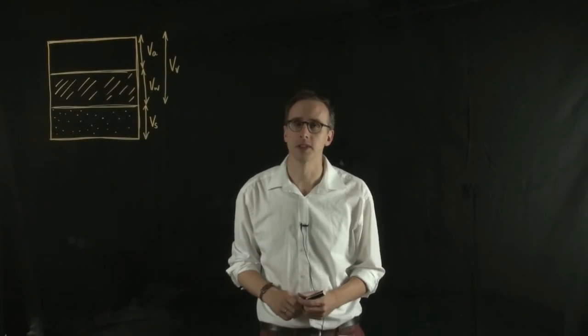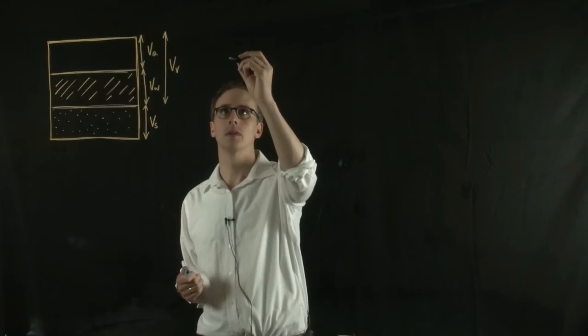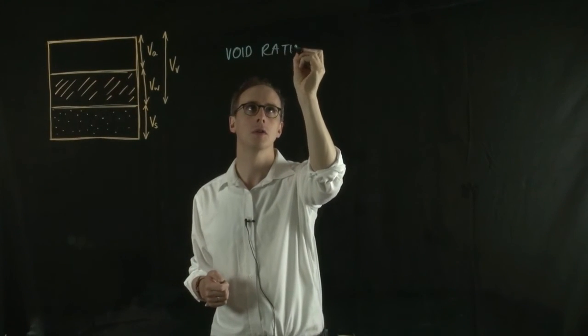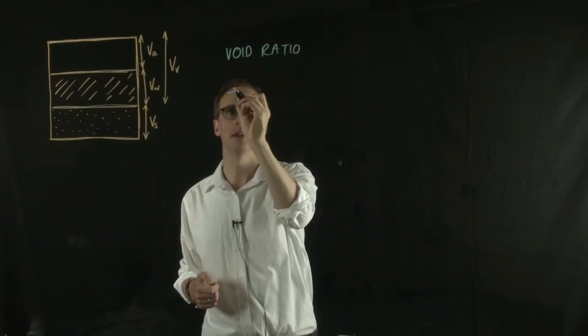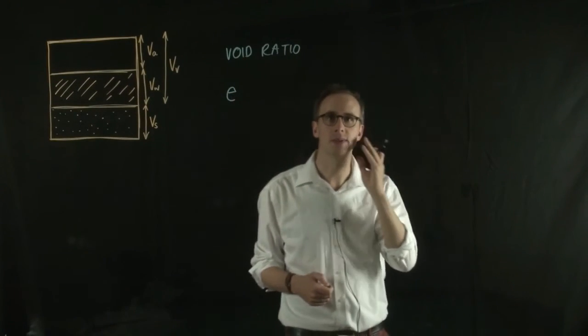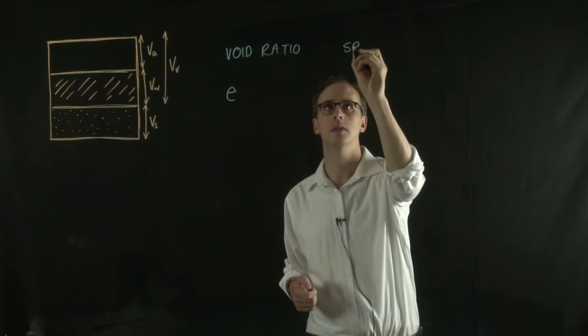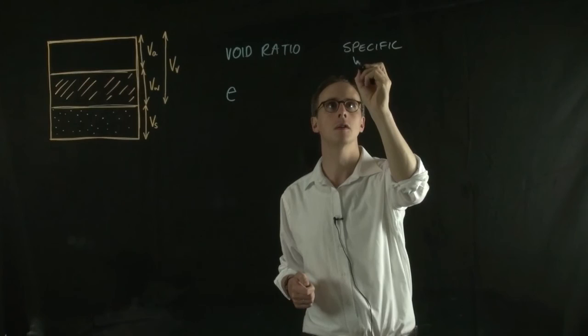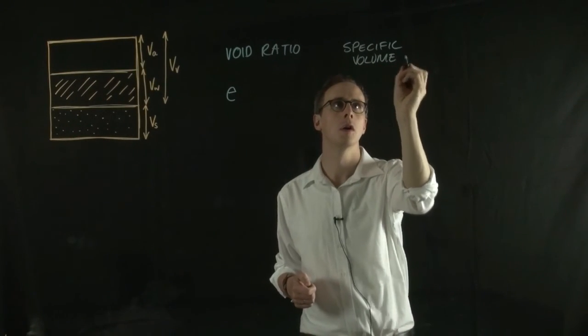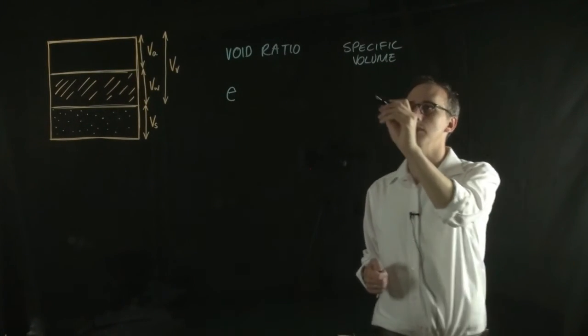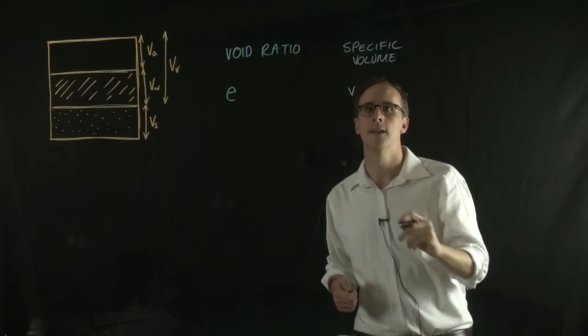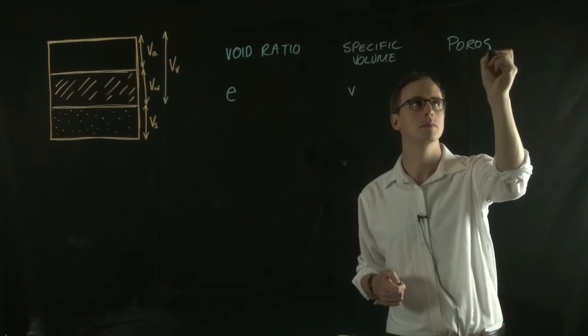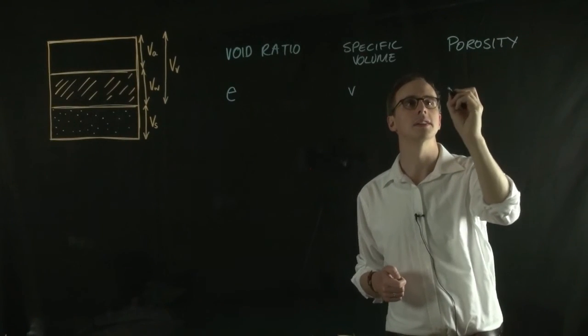Those three parameters are the void ratio, and that's given the symbol e. The specific volume, and that's given the symbol small v, and porosity. That's given the symbol n.